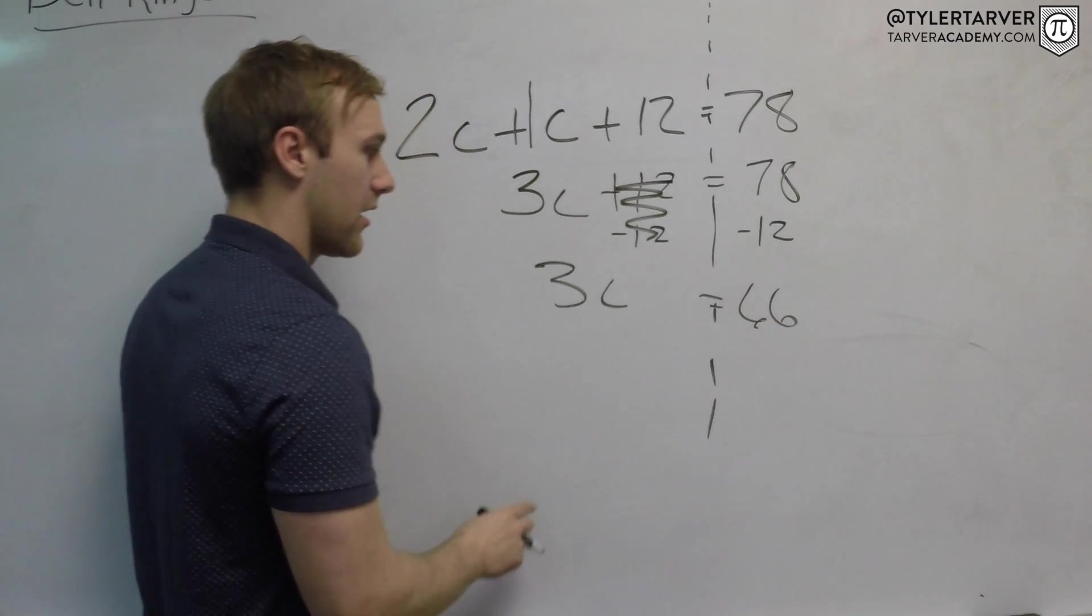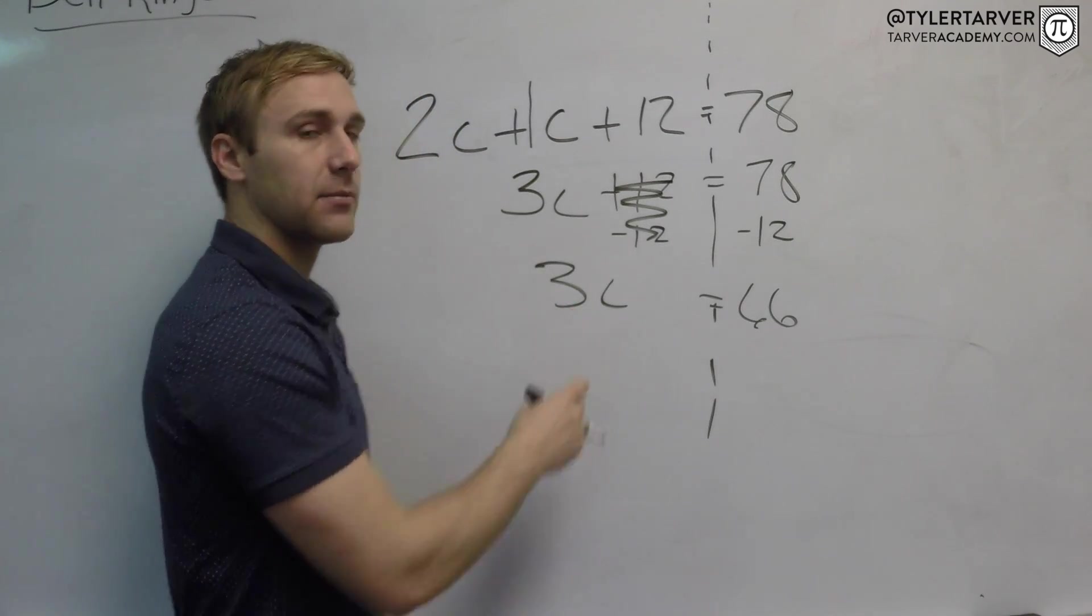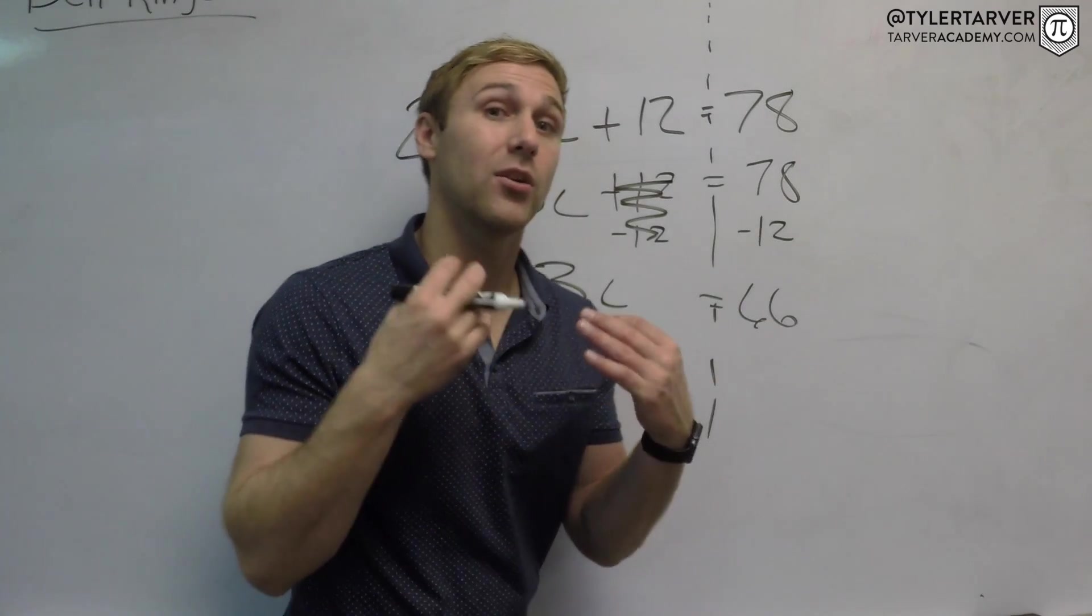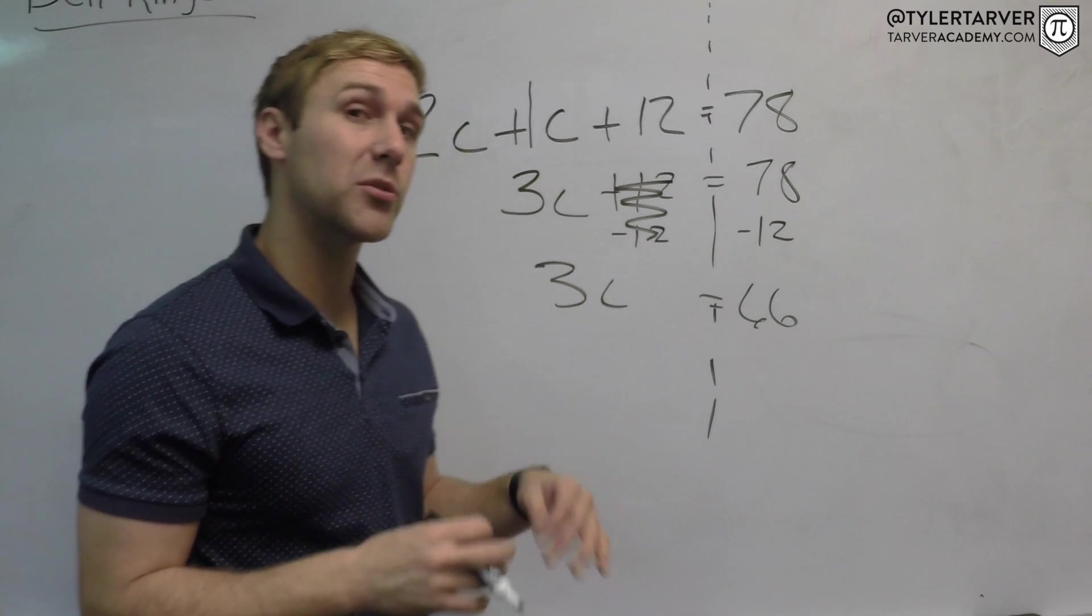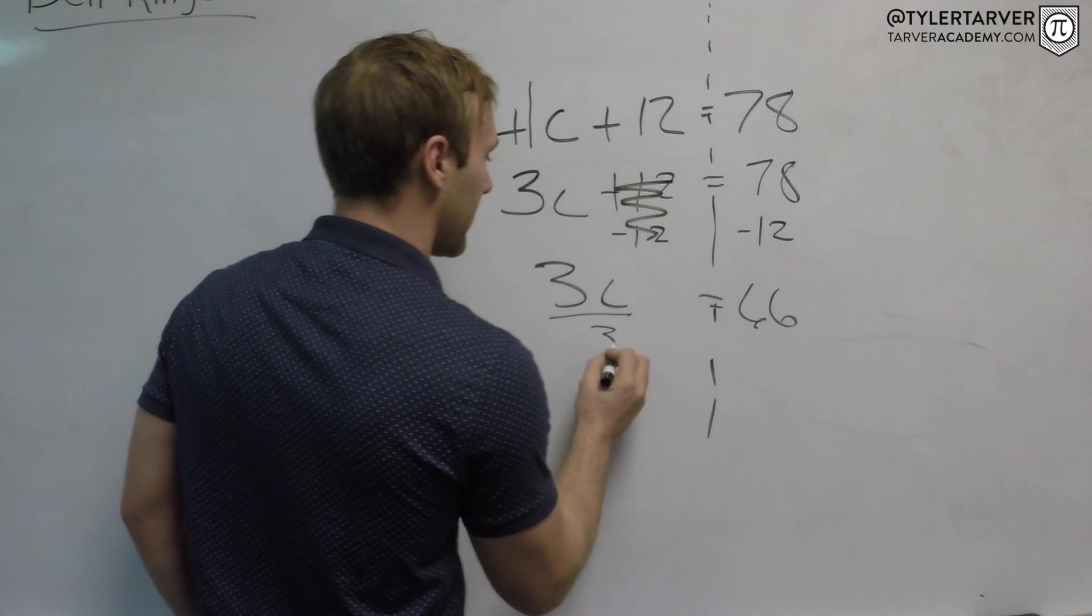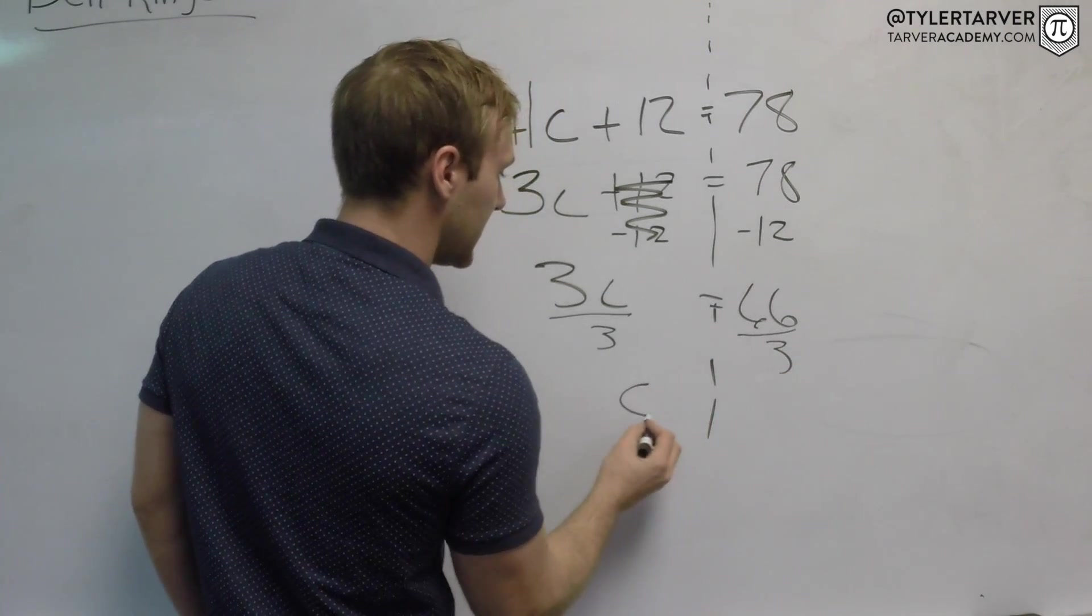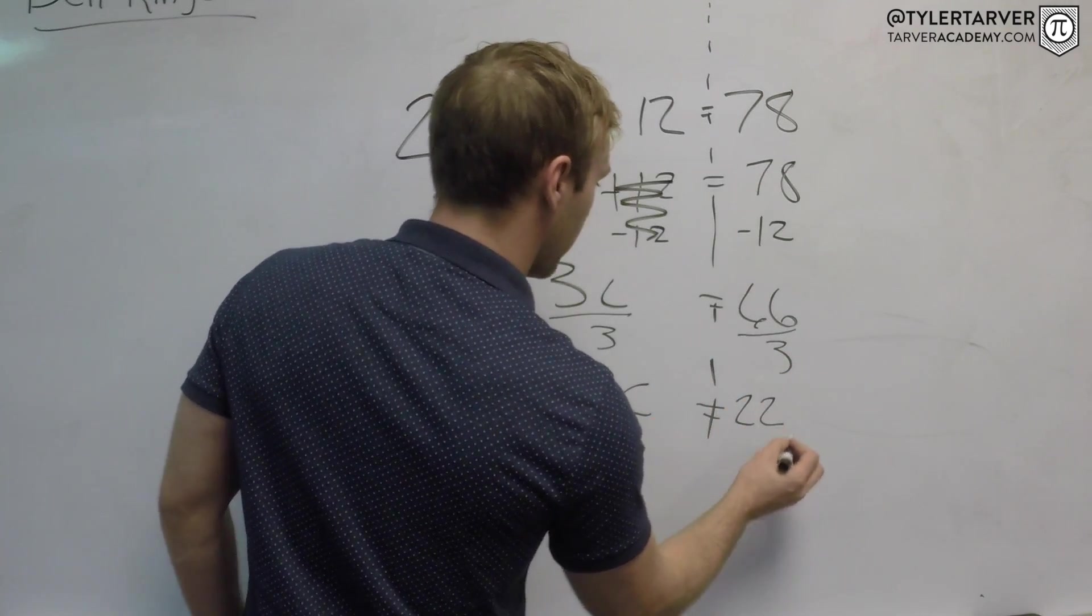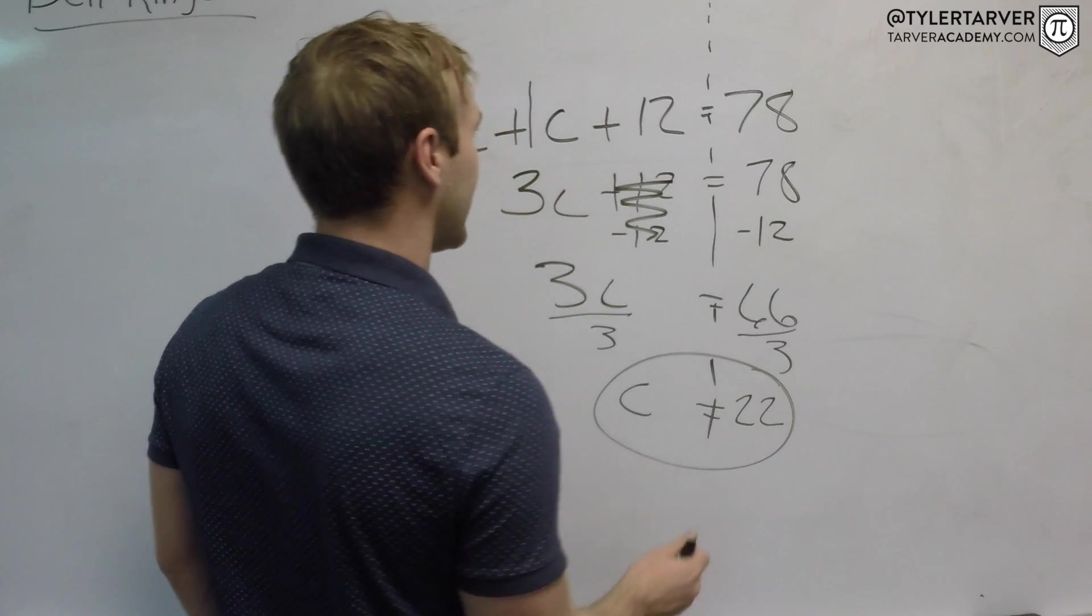Last step: it's 3 times C. To go across the equal sign we gotta do the opposite. What is the opposite of multiplying times 3? That's right, dividing by 3. C equals 22, and we have our correct answer.